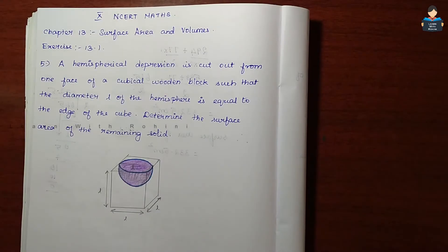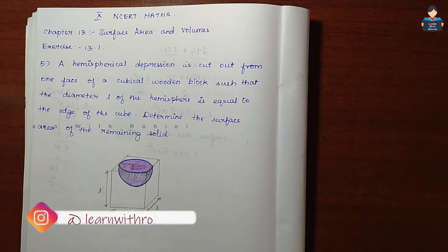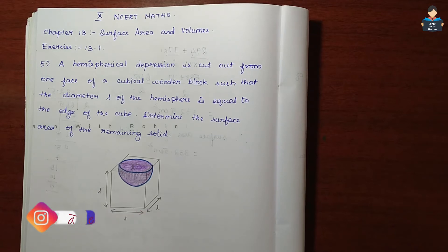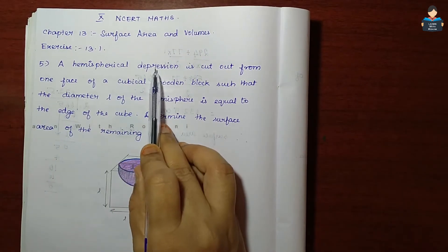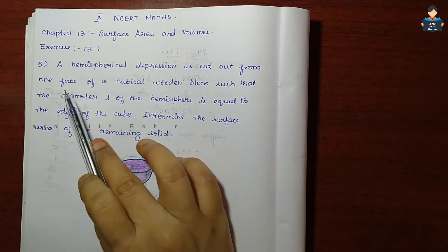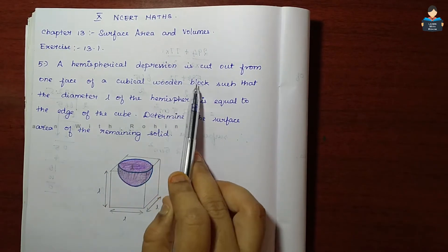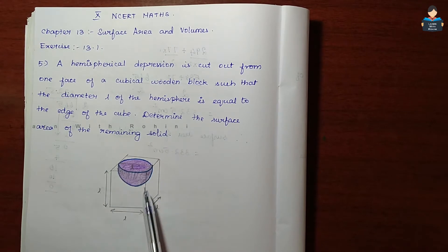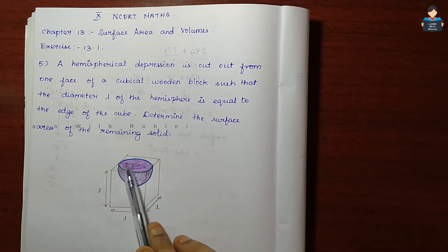Hello everyone, welcome to our channel. In this video, 10th standard NCERT Math Chapter 13 - Surface Area and Volumes, Exercise 13.1, fifth sum. A hemispherical depression is cut out from one face of a cubical wooden block.